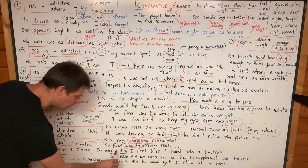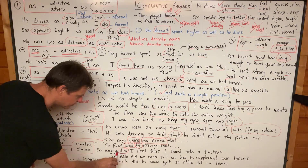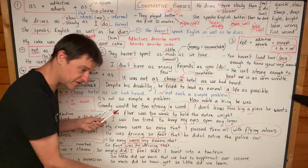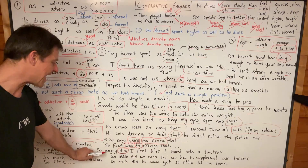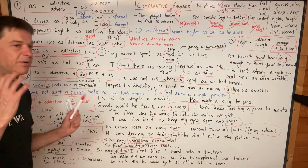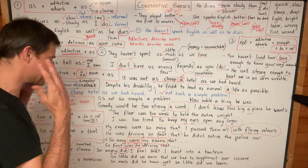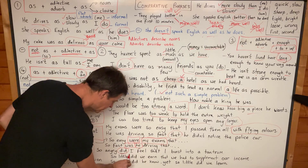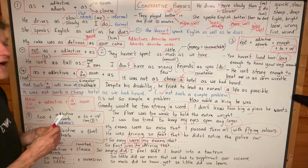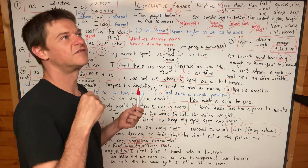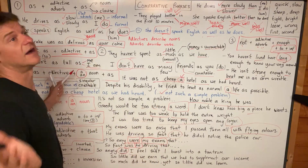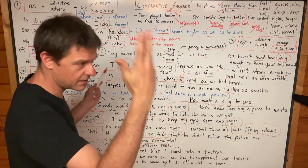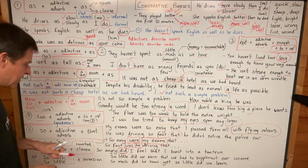Here are some more examples. We need 'do', 'does', or 'did' — 'did' in past simple, 'do' or 'does' in present simple. For example: 'So angry did I feel that I burst into a tantrum' — I had a temper tantrum. We have to have inversion with the auxiliary verb. So angry did I feel; so wonderful do I feel (present tense); or so wonderful does she feel (present tense).